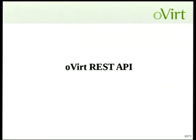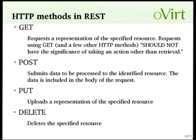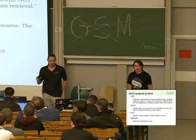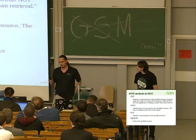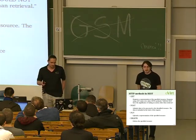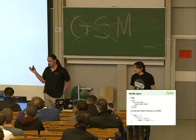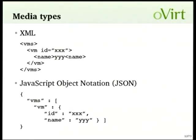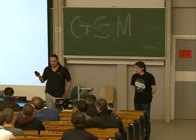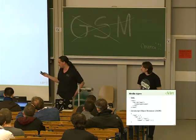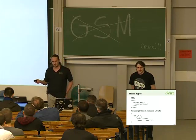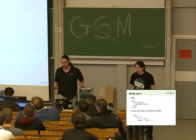Let's talk about the REST API — the core API that oVirt engine exposes. It's just making HTTP calls: GET to get a list of resources or a single resource representation; POST to submit a new resource or act upon an existing one, like launching a VM; PUT to update a resource; and DELETE to remove a resource. The media types we support are XML and JSON — basically the same fields, and you just specify in the request which media type you send and which response format you want.